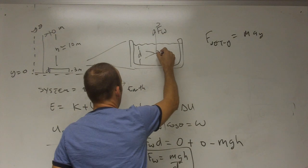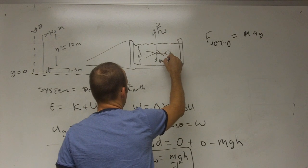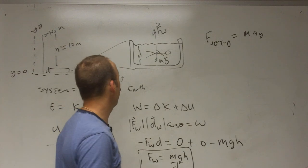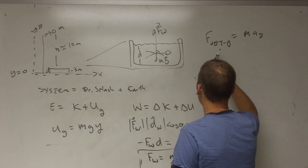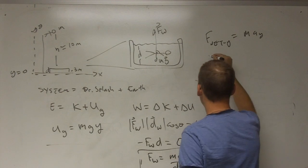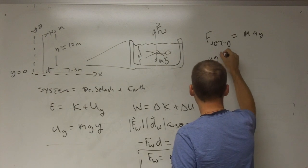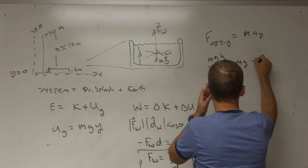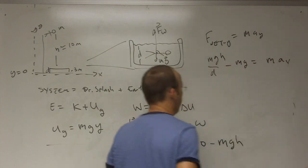So I could say F net in the Y direction equals MAY. Okay. So now I do have to include that gravitational force if I want to calculate the net force. So here I have, I want to calculate the acceleration. Okay. So the F net is going to be this going up in the Y direction. MGH over D minus MG and that's going to be MAY.